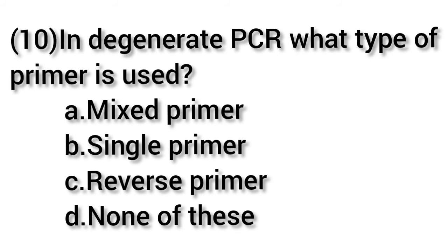The next question: in degenerate PCR, what type of primer is used? Option A mixed primer, option B single primer, option C reverse primer, and option D none of these. The answer is option A — mixed primers are used in degenerate PCR, and degenerate PCR is otherwise the same as standard PCR.